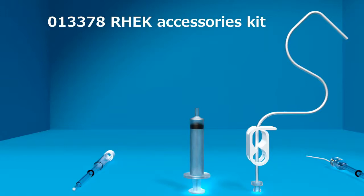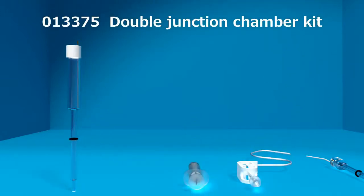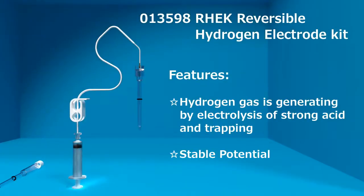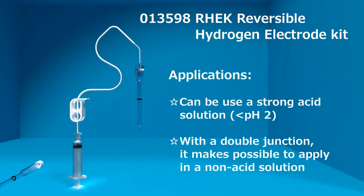It makes unnecessary the complicated and dangerous setup of the hydrogen cylinder and avoids the large volume of hydrogen gas exhaustion, despite that it has good potential stability. It can be used in a strong acid solution, also when using double junction, it makes possible to apply in a non-acid solution.